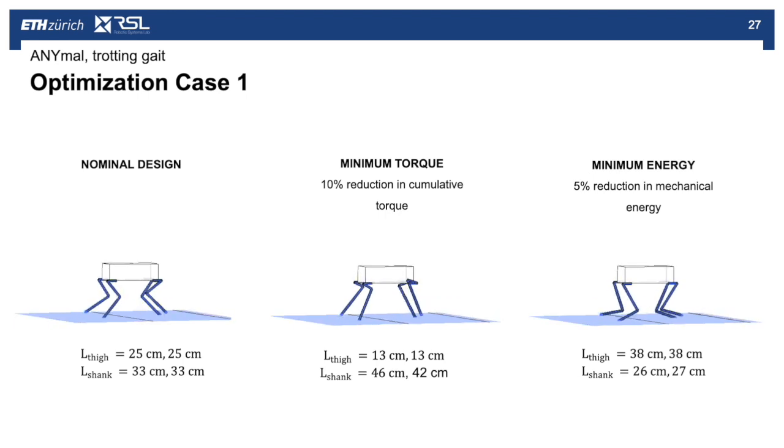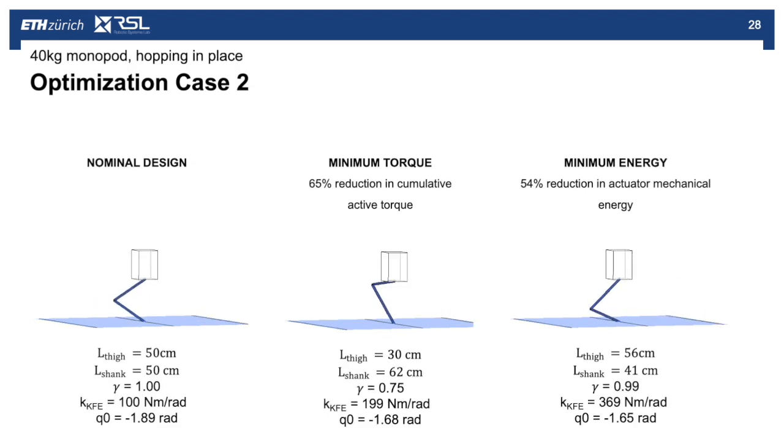Firstly, we'll start with the ANYmal platform in a trotting gait. We start with the nominal design which has 25 centimeter length thighs for the front and hind legs and 33 centimeter shank. We then optimize this design first for a minimum torque, and we find a reduction of 10 percent in the cumulative torque over all of the 12 actuators. We then look at a minimum energy case and we find we can reduce the energy, the mechanical energy consumed, by five percent.